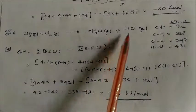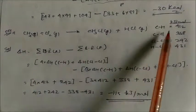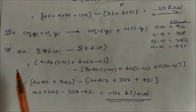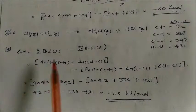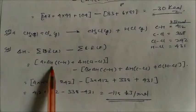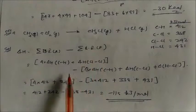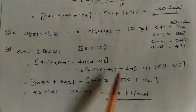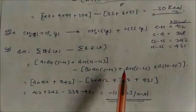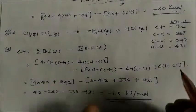For chlorination of methane to give CH₃Cl and HCl: all bond enthalpies (C–H, Cl–Cl, C–Cl, H–Cl) are given in kJ/mol. Heat of reaction = bond enthalpy of reactants minus bond enthalpy of products. Reactant: 4 × C–H + Cl–Cl. Product: 3 × C–H + C–Cl + H–Cl.